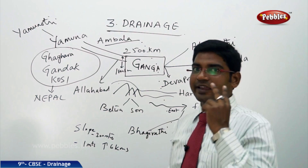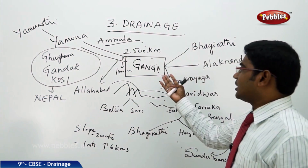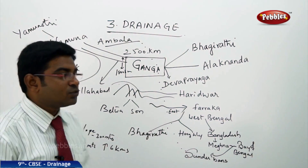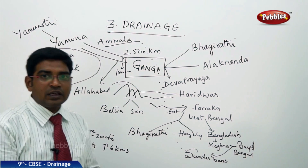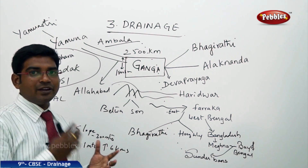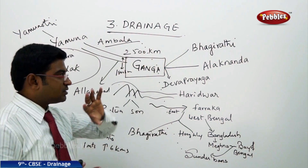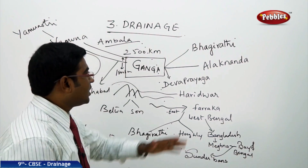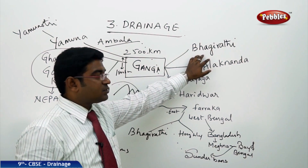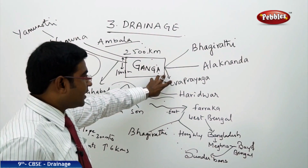Now let us discuss the second major Himalayan river, that is the Ganga. River Ganga has been widely spread across the entire northern plains. River Ganga originates from two of its tributaries: Bhagirathi and Alaknanda. Bhagirathi originates from the Himalayas and these two join at Devaprayag, giving birth to River Ganga.